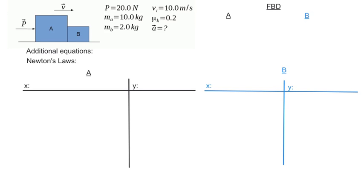In this problem we have two boxes sitting on a surface. They're currently sliding to the right and also pushed to the right by a push of 20 newtons. The question is what is their common acceleration to the right? I've already prepared the whole setup for the problem. First I'm going to draw the free body diagrams of both objects, then look for additional equations, and finally plug in Newton's first and second law for both objects in the x and y direction.